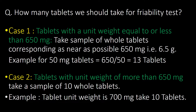How many tablets should we take for the friability test? Consider the following two cases. Case one: tablets with a unit weight equal to or less than 650 mg. In such cases, take a sample of whole tablets corresponding as near as possible to 650 mg, i.e., 6.5 grams. For example, if a tablet weighs 50 mg, divide 650 by 50 to get 13 — so we should take 13 tablets for the friability test.